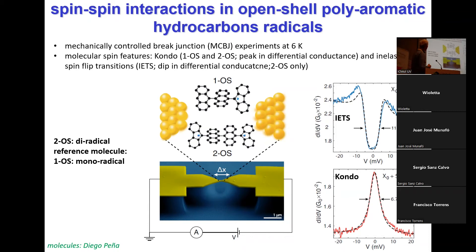So we do the mechanical break junctions at 6 Kelvin with these two molecules. What we see is that sometimes we see a peak — this is the dI/dV, the differential conductance around zero bias. Sometimes we see a peak in both molecules. But in the 2OS — the diradical — we also see a dip-like structure. The peak we understand: this is Kondo physics. It tells you that you have a localized moment — for instance, a single spin. The inelastic feature tells you that you have an interaction between spins. I'll show in a moment what is going on.